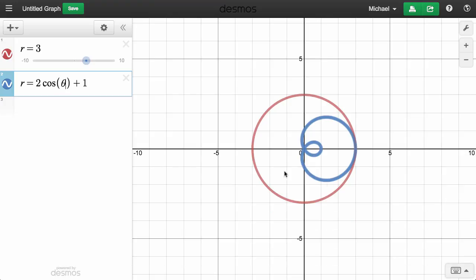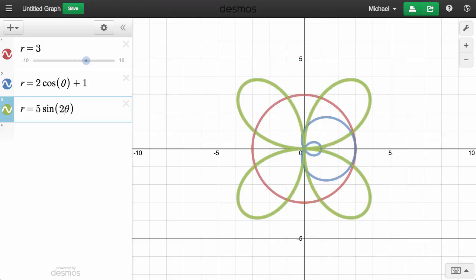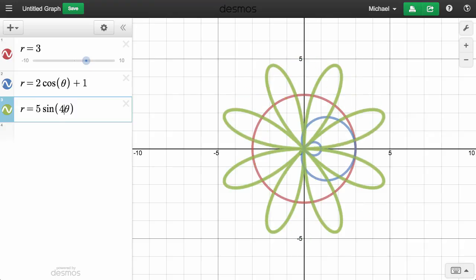Some interesting things happen when we tinker with the argument of a function like this, r equals 5 sine theta. Let's change the argument from theta to 2 theta, then 3 theta, then 4 theta, and notice the effects.